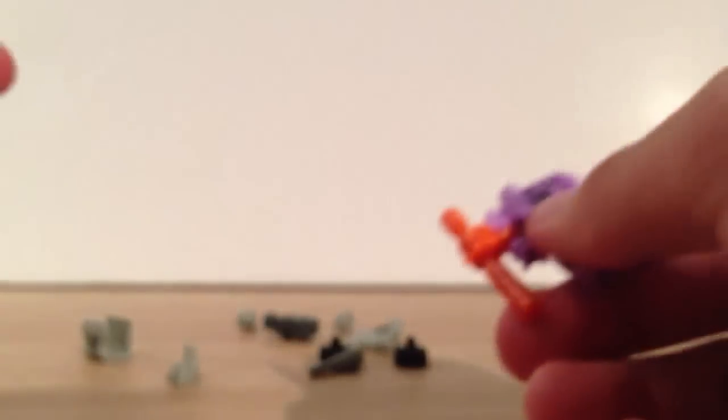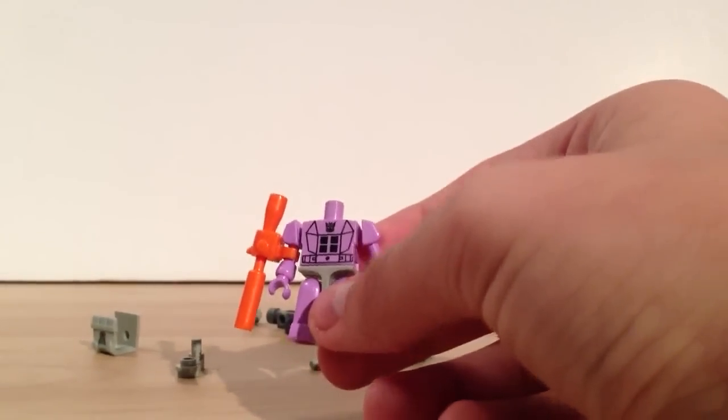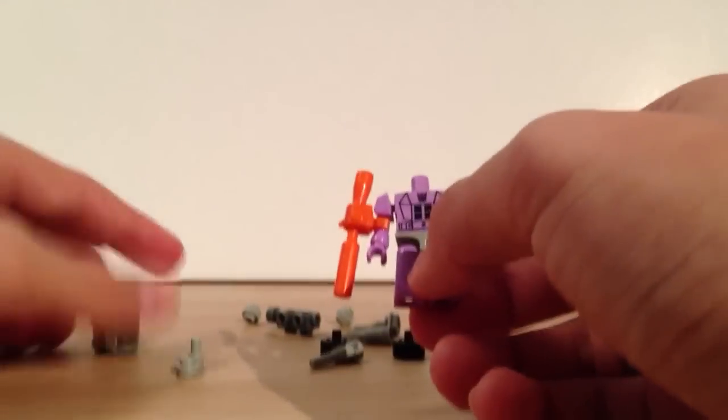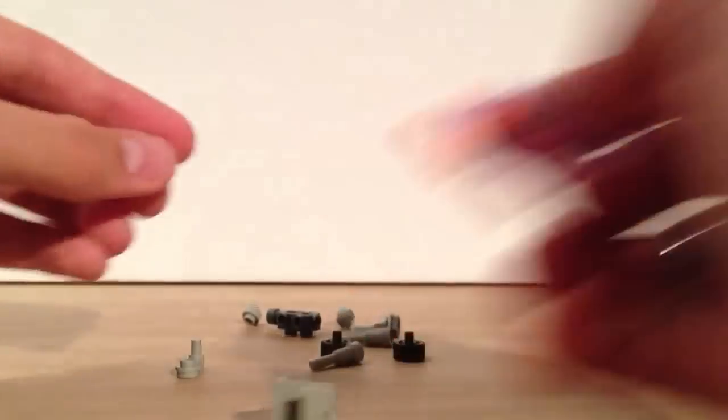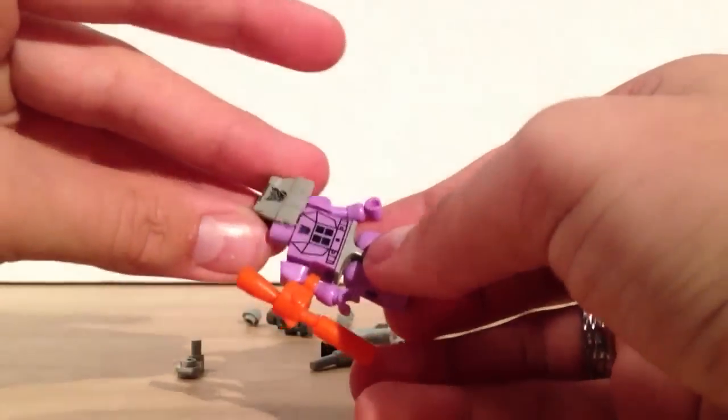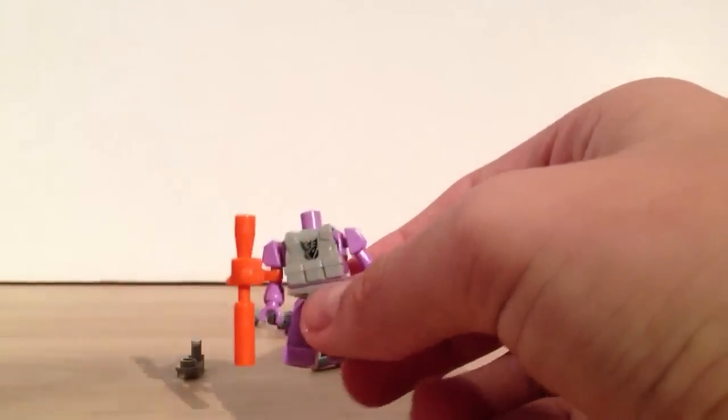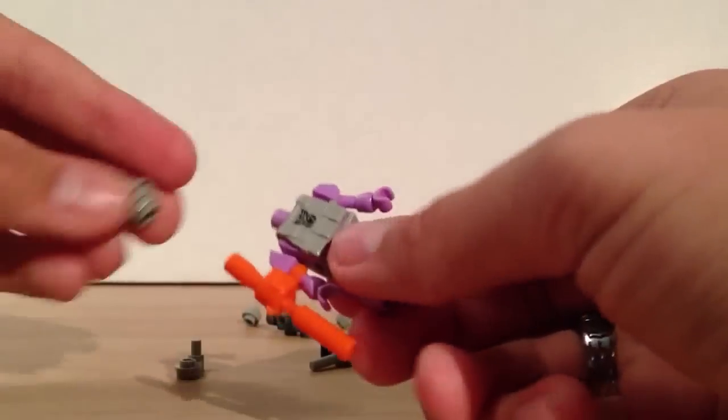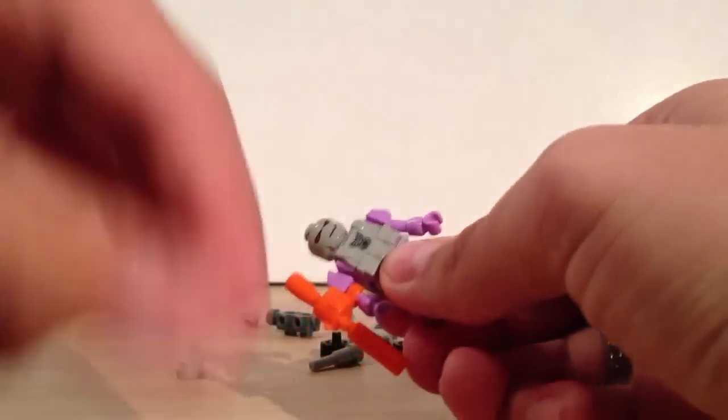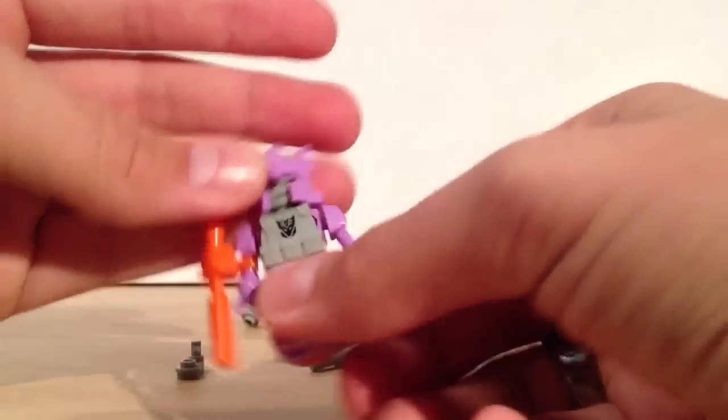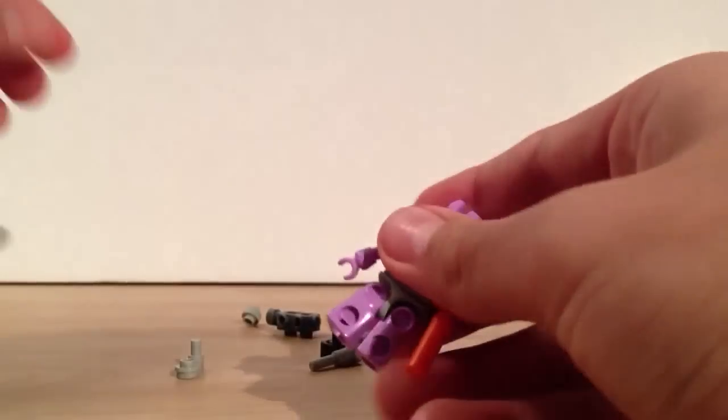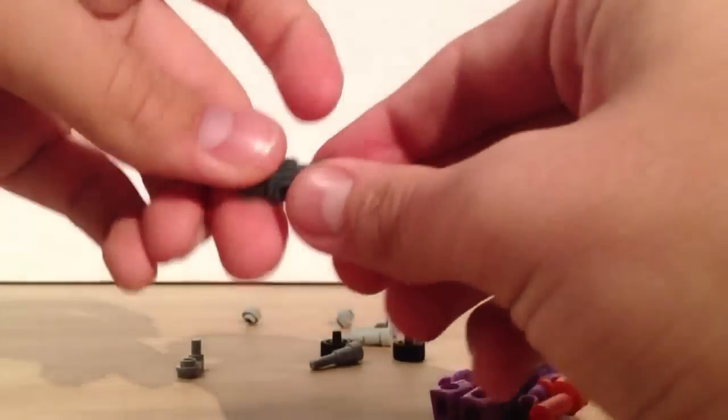Now I'm going to take him apart slightly and begin the normal robot build with all his accessories. You want to take this vest piece here and slide it over. As you can see it's got a Decepticon logo. Then you put his head back on and his helmet proper. Then on the back here, you're going to want to assemble his backpack.